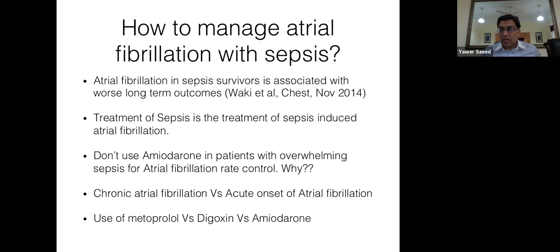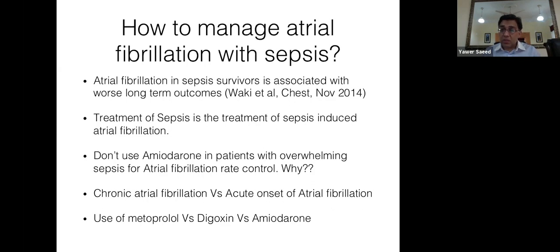Once the patient recovers from sepsis, make sure to anticoagulate them for at least six weeks, as they are at high risk of stroke. Also refer them for cardioversion if this was the first episode of AF in sepsis. After six weeks, assess whether they have a tendency to remain in AF using Holter monitoring, then decide about further anticoagulation.